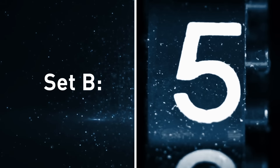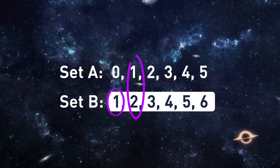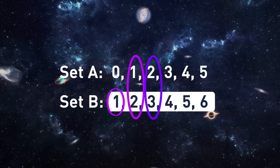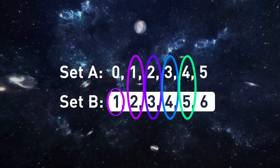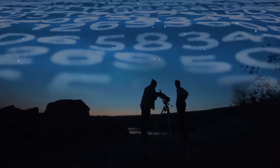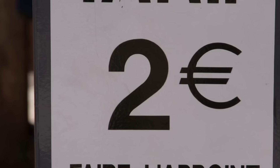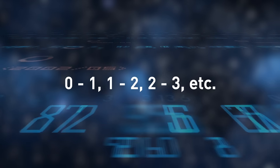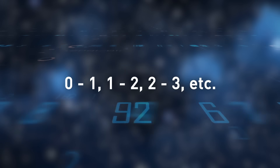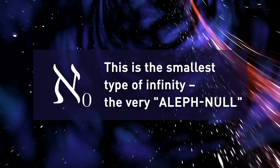Set B: one, two, three, four, five, six. As you see, set B starts one number higher than set A. But we have one-to-one correspondence between sets, which means they represent equal types of infinities. In other words, each number in set A corresponds to another number in set B that is one value higher. Now this is the smallest type of infinity — the very aleph null.